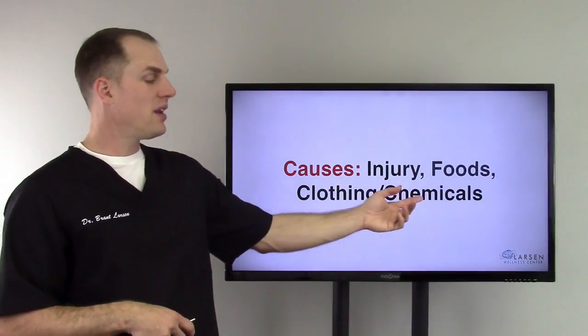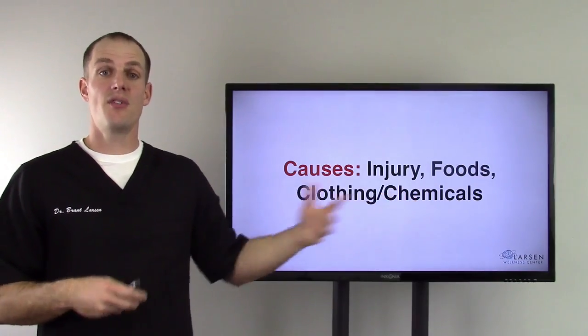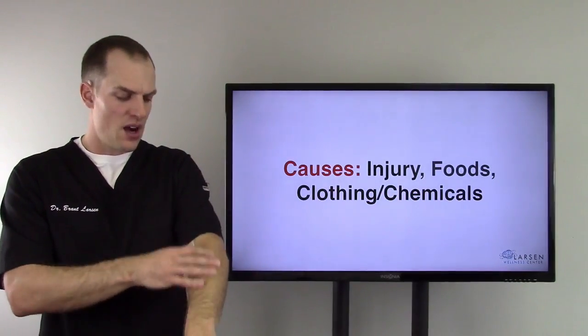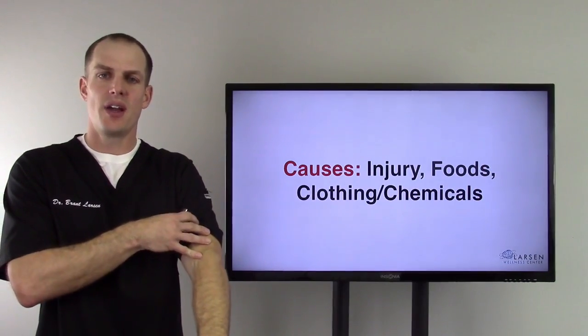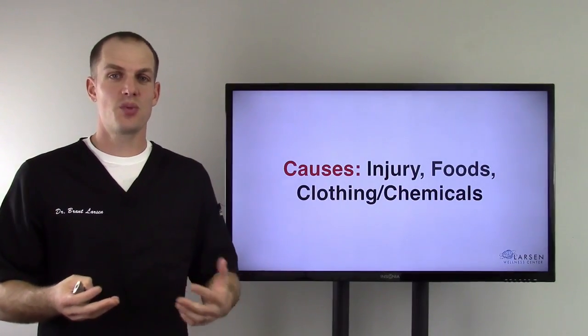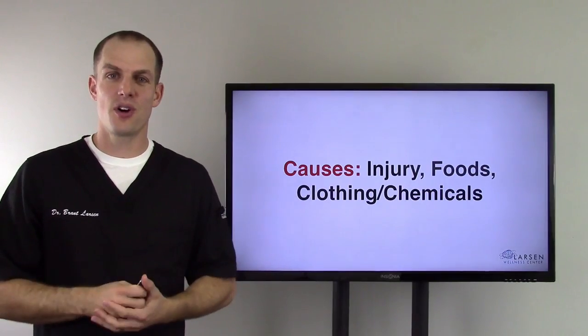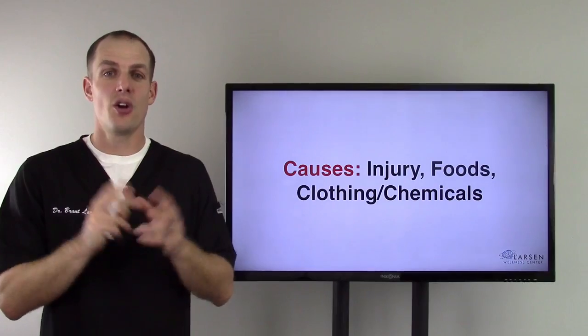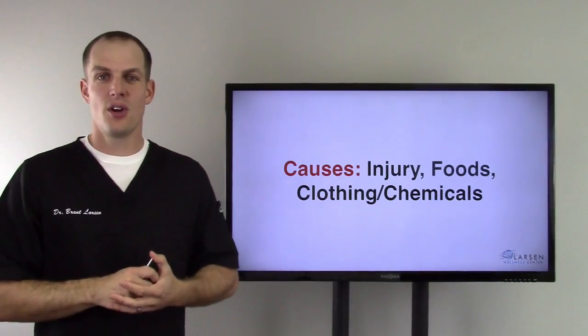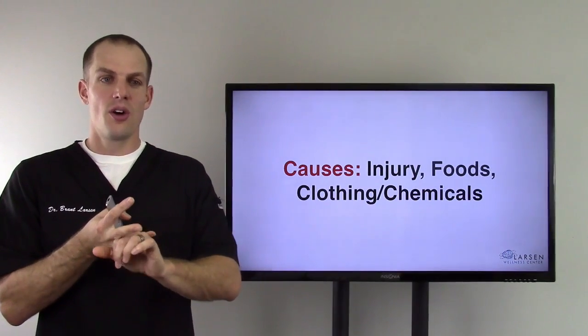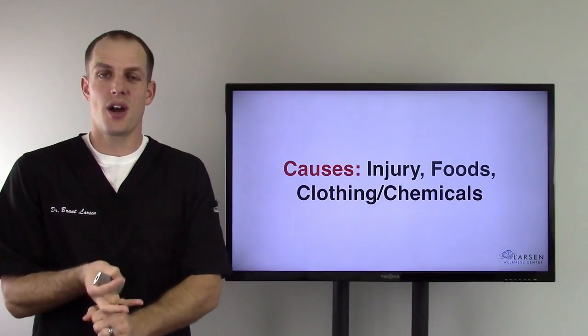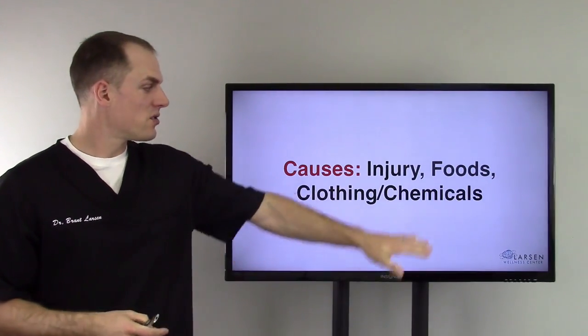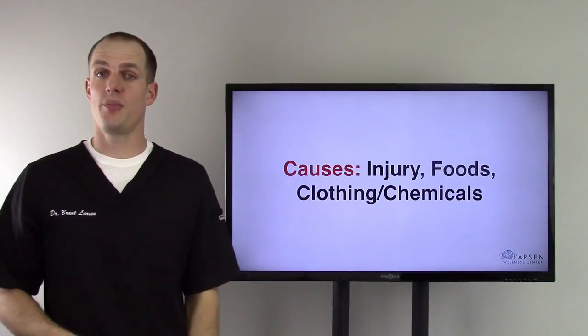Foods can cause an acute injury to that gastrointestinal system. We have clothing and chemicals. Have you ever had a child who put on maybe a new shirt and got a rash or got red because they didn't wash it first? That's why I always wash clothes first, because they're loaded with chemicals. If you're still using regular detergent for your laundry or for your dishwasher, you need to switch. Toxic chemicals are in there. So chemicals can cause acute inflammation as well.